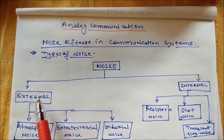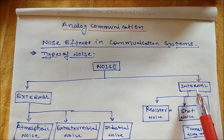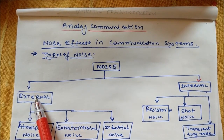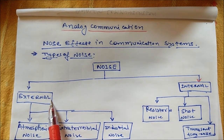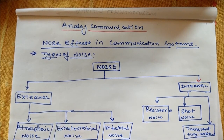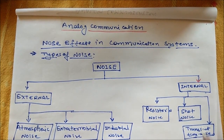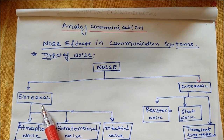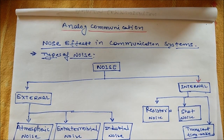Noise is broadly divided into external form and internal form — also called external noise and internal noise. External noise refers to noises which are generated outside the receiver or an amplifier. Similarly, internal noise is that type of noise which is generated within the receiver or amplifier itself.